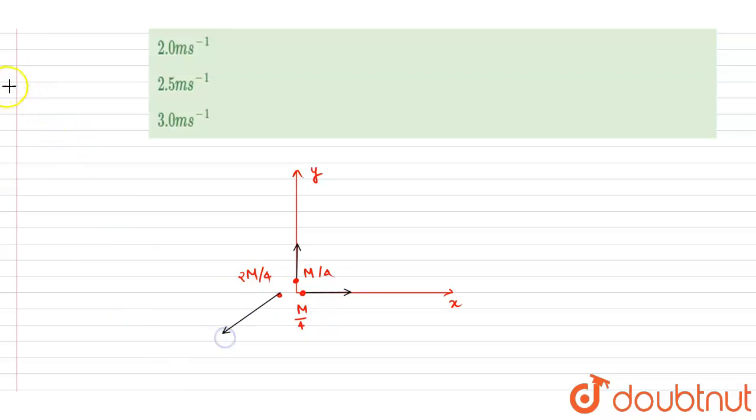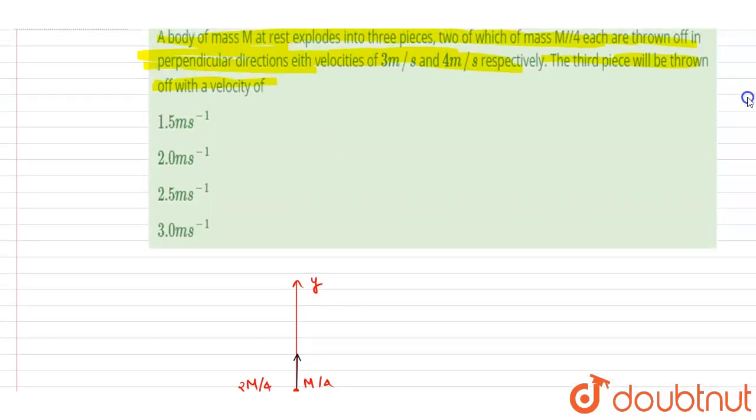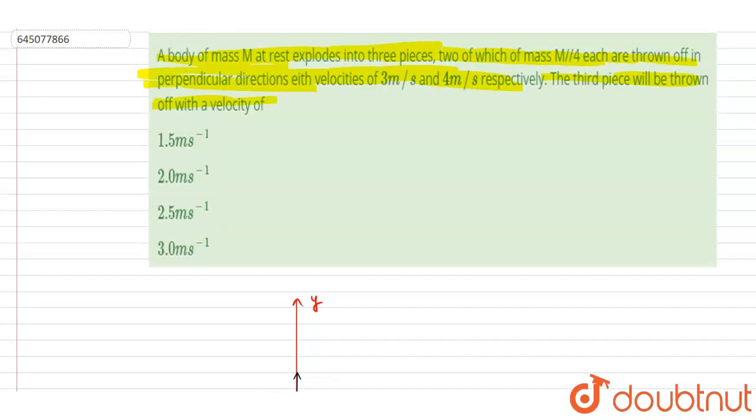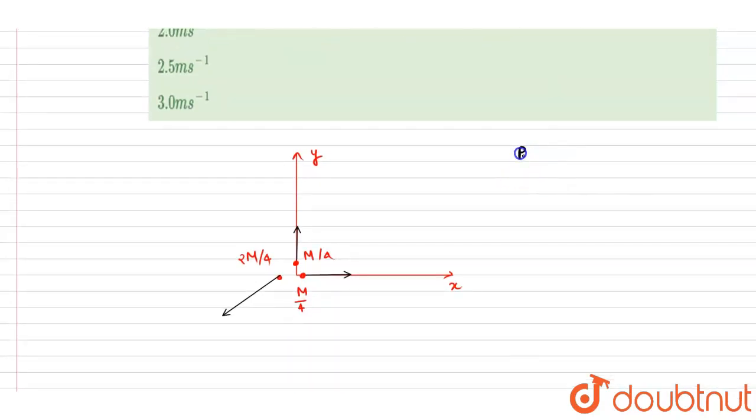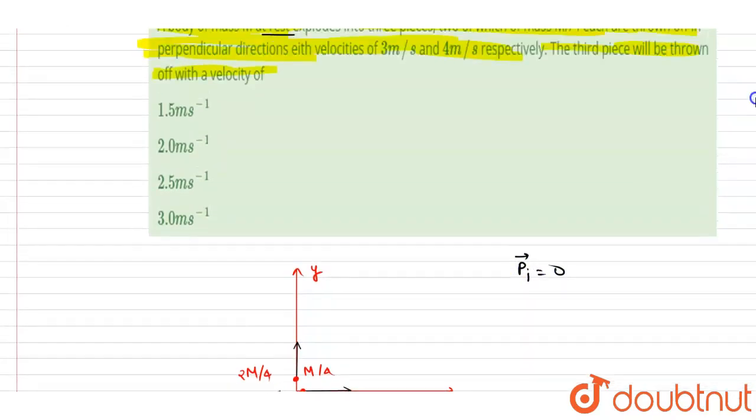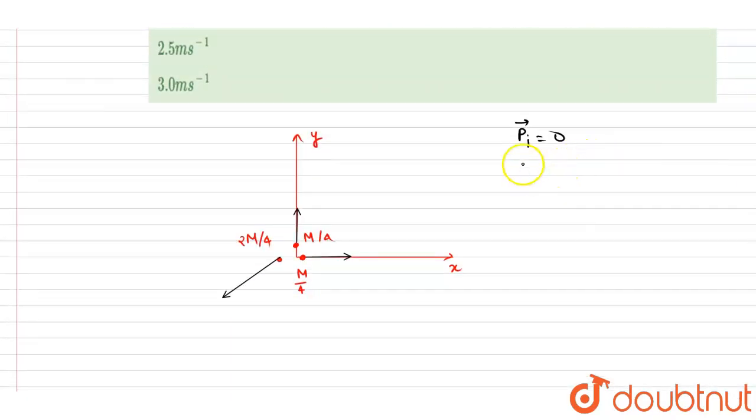So if you see here, initially the system was at rest, right? So initial momentum, I will write down, it was zero. And since there is no external force, the momentum will remain conserved. So I will write down initial momentum is equal to the final momentum.